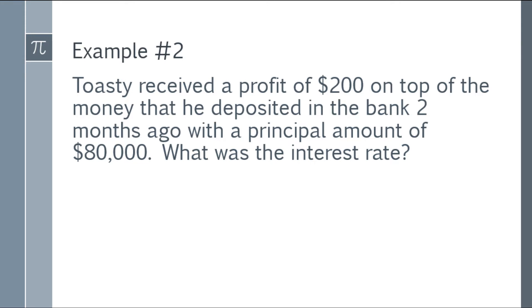Example number 2. Toasty received a profit of $200 on top of the money that he deposited in the bank two months ago with a principal amount of $80,000. What was the interest rate?